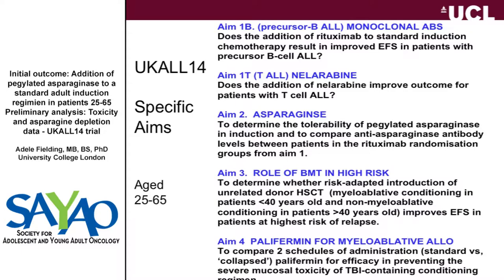One of the main aims is to ask randomized questions about rituximab and nelarabine. For patients with B-precursor ALL, all patients are randomized to receive rituximab or standard induction. We're not measuring CD20 to determine eligibility for rituximab, but we're prospectively finding out the correlation between CD20 expression and response. For patients with T-ALL, they're randomized to receive an additional course of nelarabine or continue with standard therapy. We're also interested in whether anti-asparaginase antibody formation differs between the rituximab and non-rituximab arms.